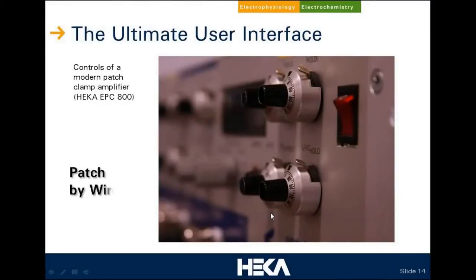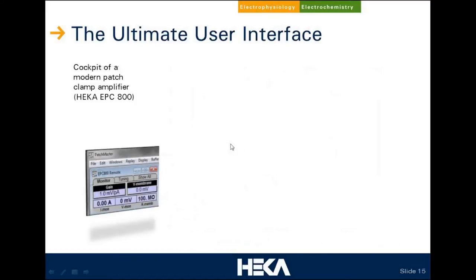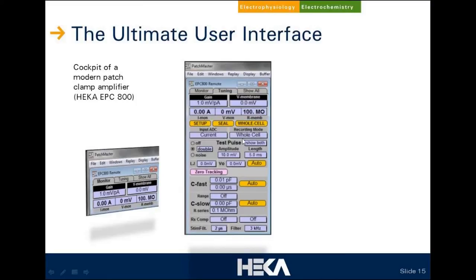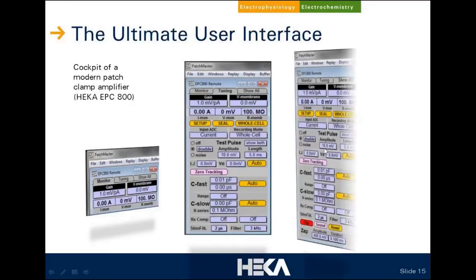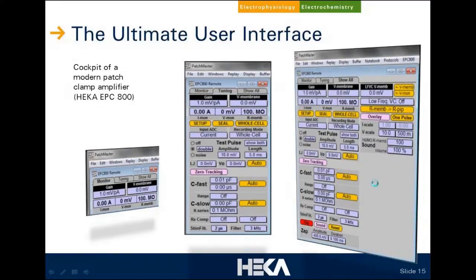Translating that to a patch clamp amplifier: patch-by-wire means you have what looks like an analog control with knobs and buttons, but it controls digital circuitry behind the scenes. That's the old-world interface. The new-world interface of that same amplifier is the cockpit of a modern patch clamp amplifier — the EPC-800. It comes in three flavors: a monitoring-only mode showing values like current, voltage, and membrane resistance; a tuning mode with whole-cell compensation controls; or the full mode where you see and control everything. The one decision you have to make before the experiment is: are you going to drive yourself or use the chauffeur today?